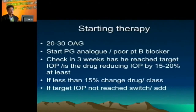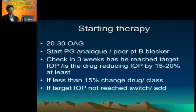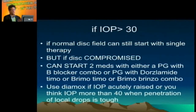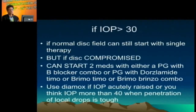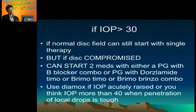If the pressure is around 20 to 30 mmHg to begin with, start with one medication — a prostaglandin analogue or a beta blocker. Check in three weeks whether the pressure has dropped significantly. If it drops less than 15 to 20 percent, the medicine is not working — change the brand or change the medicine altogether. If it is dropping but not to the desired level, yet more than 20 percent, add another medication. If IOP is greater than 30, you may start with one or two medications. If the disc is compromised — a 0.8 or 0.9 cup-to-disc ratio with field changes — don't wait for one drug; give two.